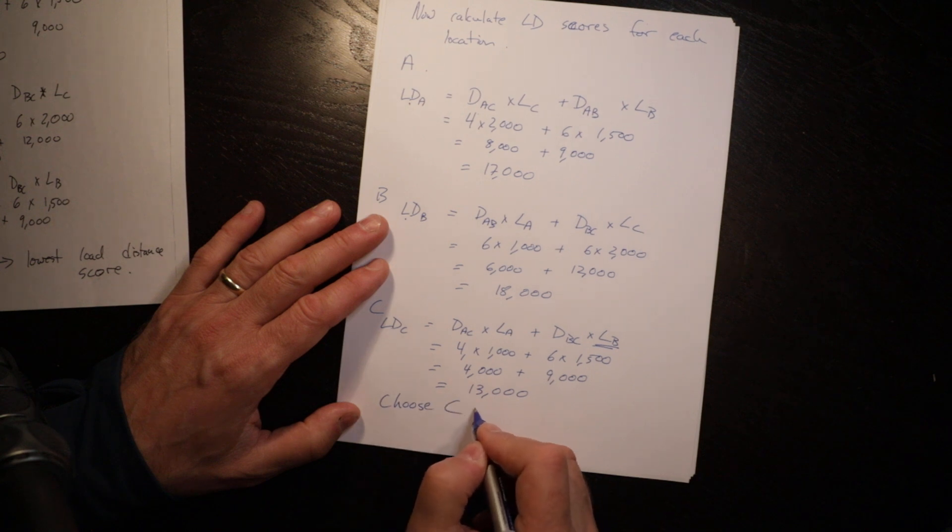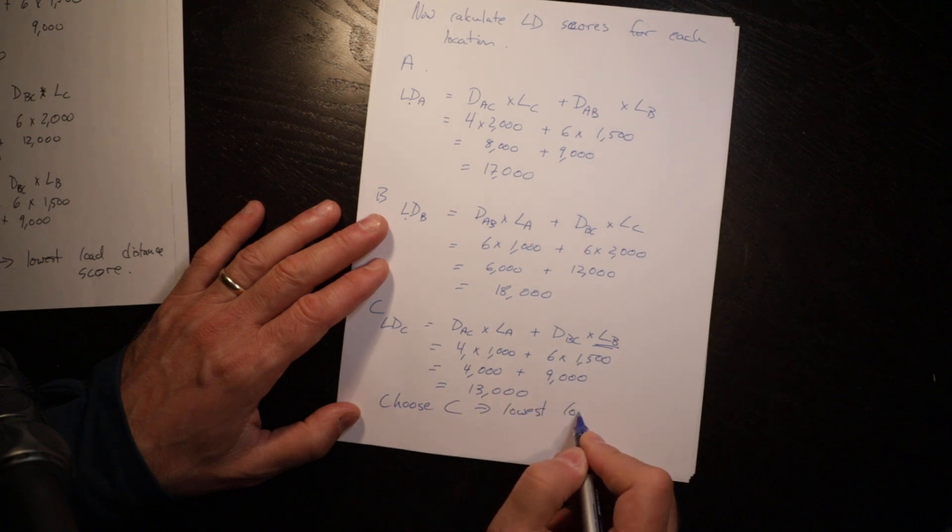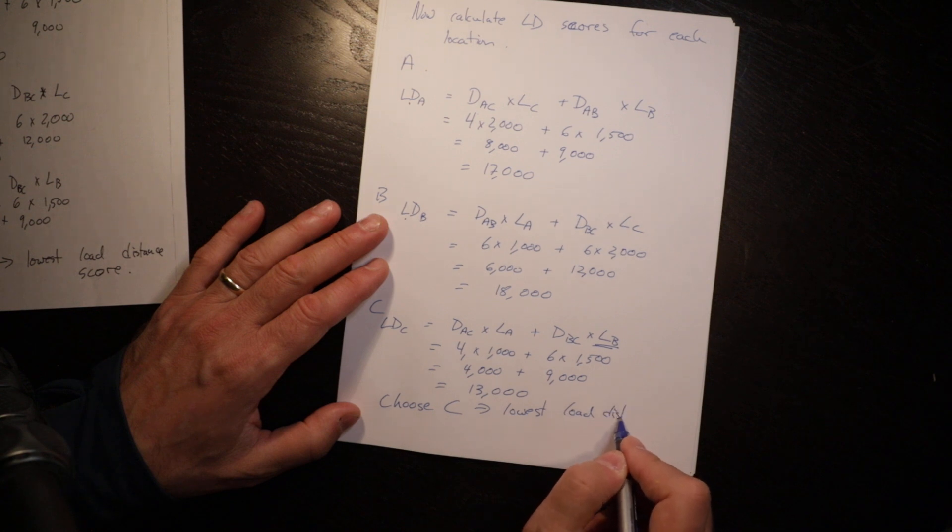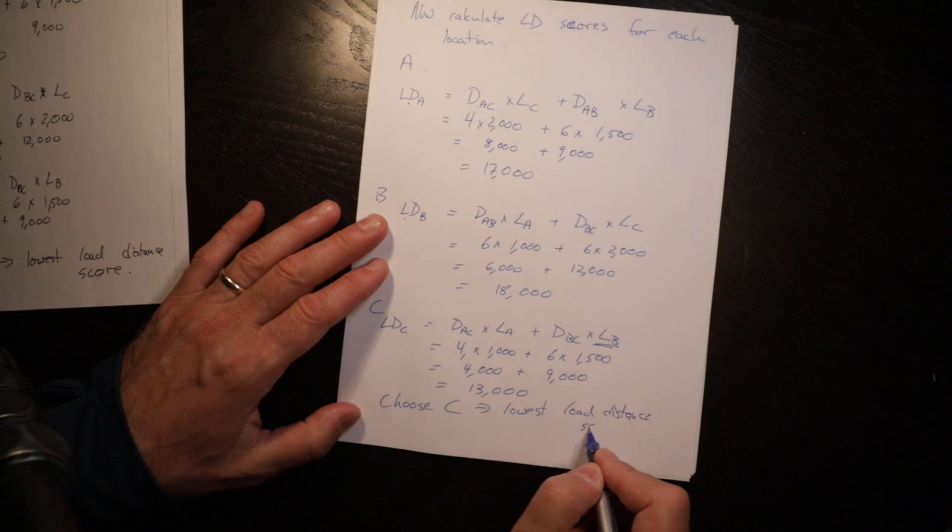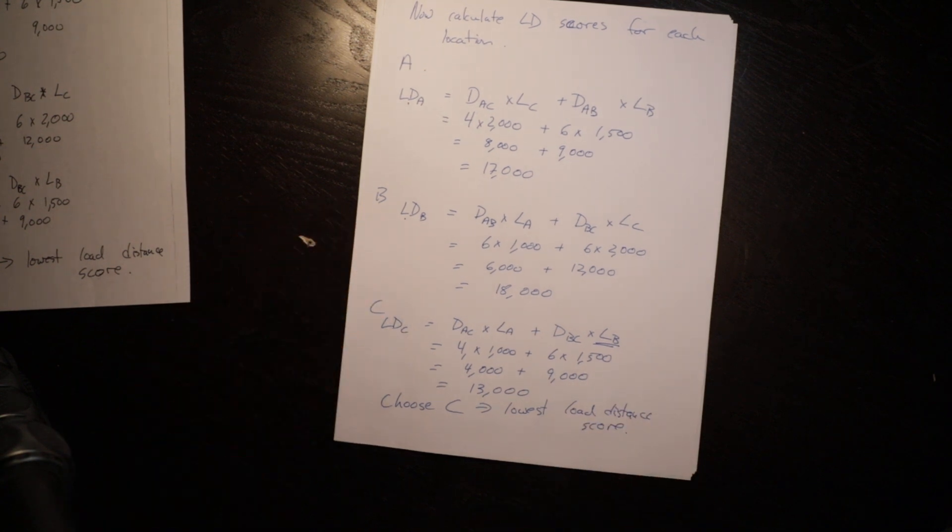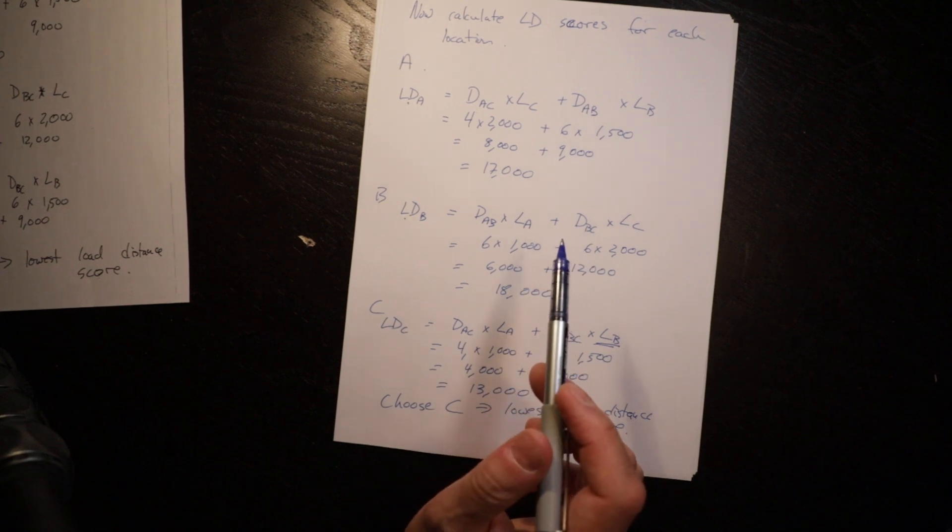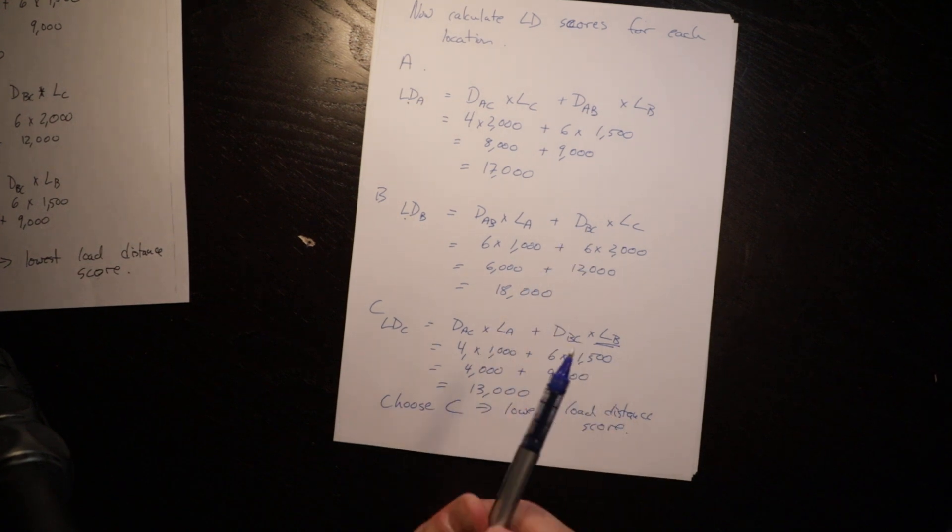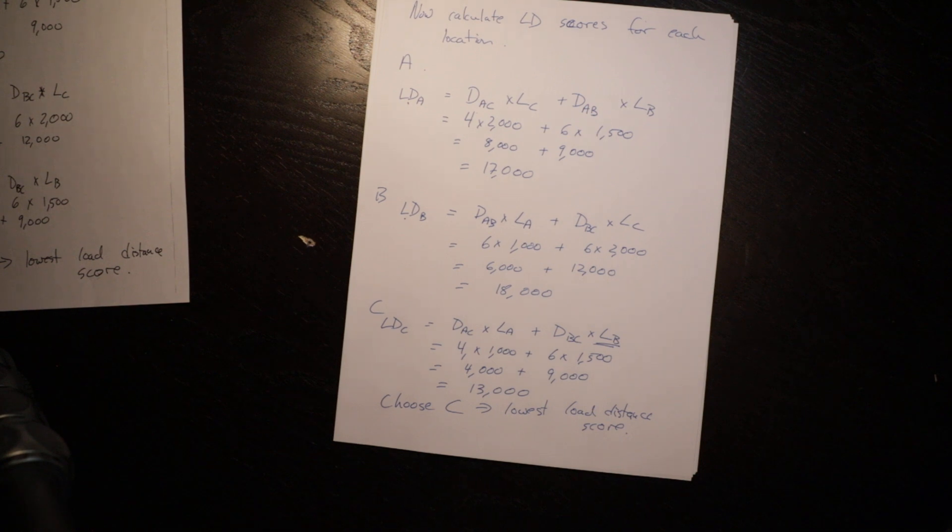Choose C. C has the lowest load distance score. Now in this circumstance, it just happened that C had the highest demand and had the lowest load distance score. That will not always happen and so that is not a shortcut you can use.